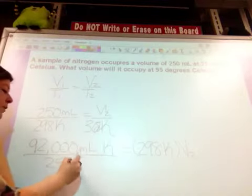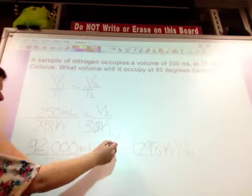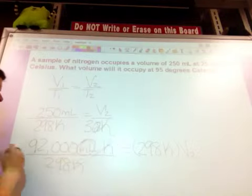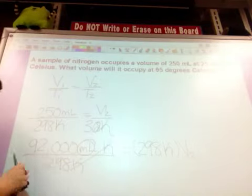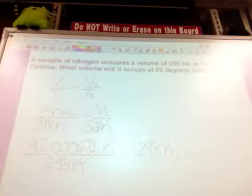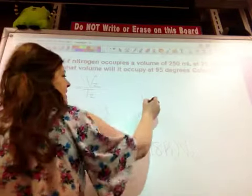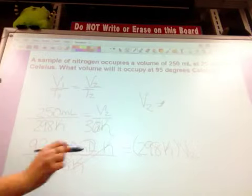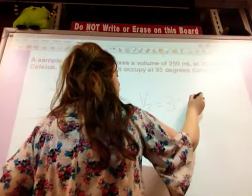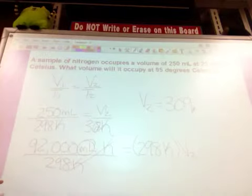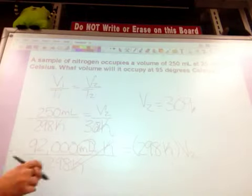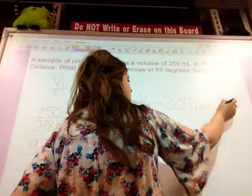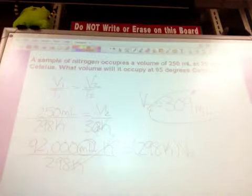And then I can see here that since I want volume, my kelvins will cancel. So I'm just left with milliliters. So then if I divided that by 298, that's going to give me my volume to be equal to 309. And since I want volume, I was left over with milliliters. That would be my milliliters.